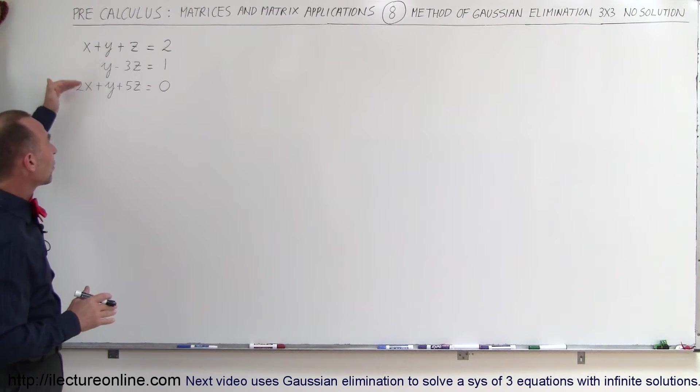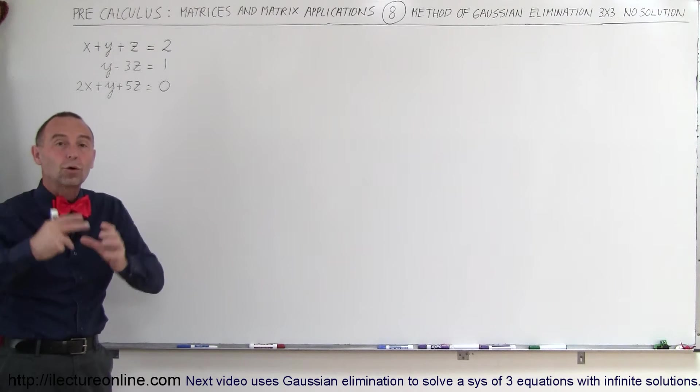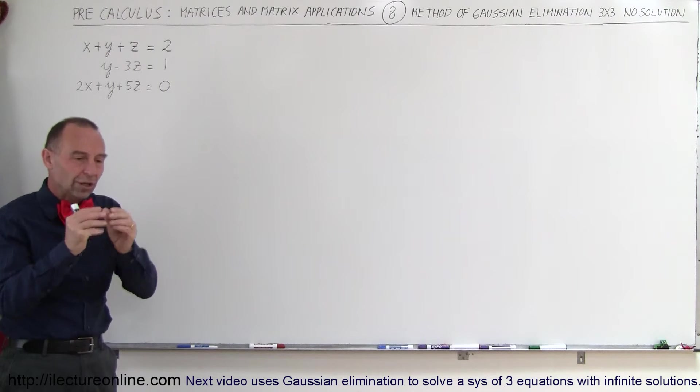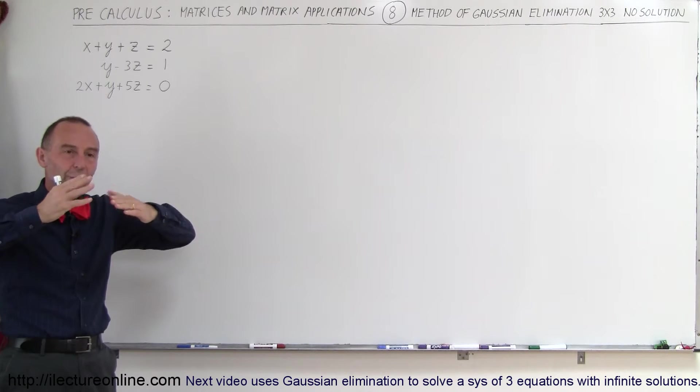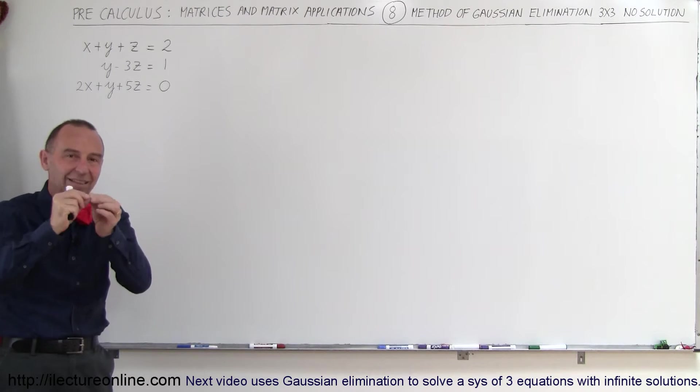Remember that these three equations really represent three planes in the x, y, z Cartesian coordinate system. In order for there to be a single solution, the three planes have to be angled in such a way that there's one spot in space where all three planes will intersect at the same location.